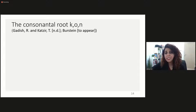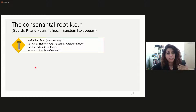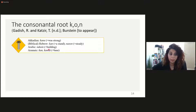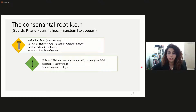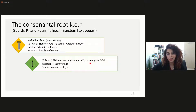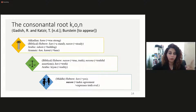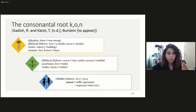A very similar diachronic path can also be observed with respect to the consonantal root KWN. This root too begins from a basic meaning of foundations and strength: in Akkadian 'kanu' means strong, in biblical Hebrew 'kan' is a stand, 'nechon' is steady; in Arabic 'takwin' means a building, and 'kan' in 'kanah' means 'based'. This meaning too evolved into more abstract meanings: 'nechon' meaning truth in biblical Hebrew, 'nechona' meaning truthful assertion, 'ken' meaning truth; in Arabic 'kayan' meaning reality. And this meaning too evolved into two intersubjective markers in Hebrew. Interestingly, undergoing the same diachronic path does not mean the same endpoint: while 'ken' is now much more associated with agreement than with truth, 'nechon' is equally associated with both uses.